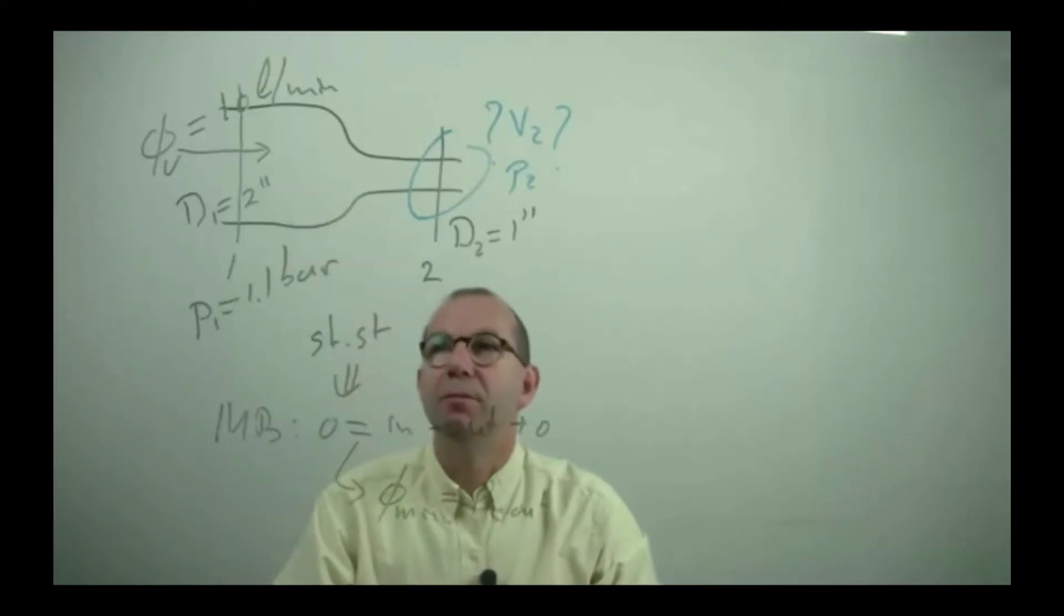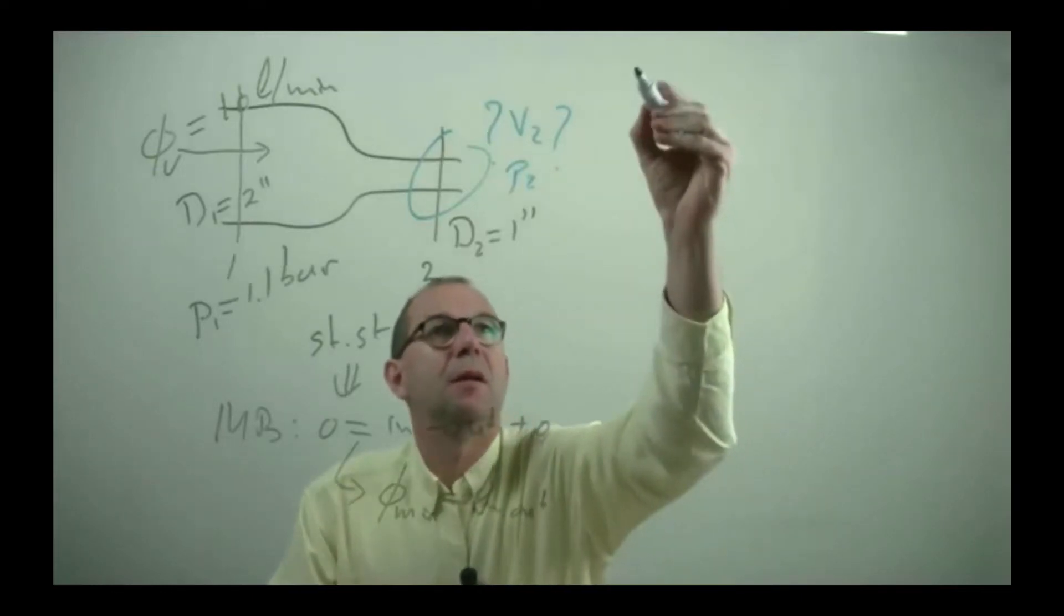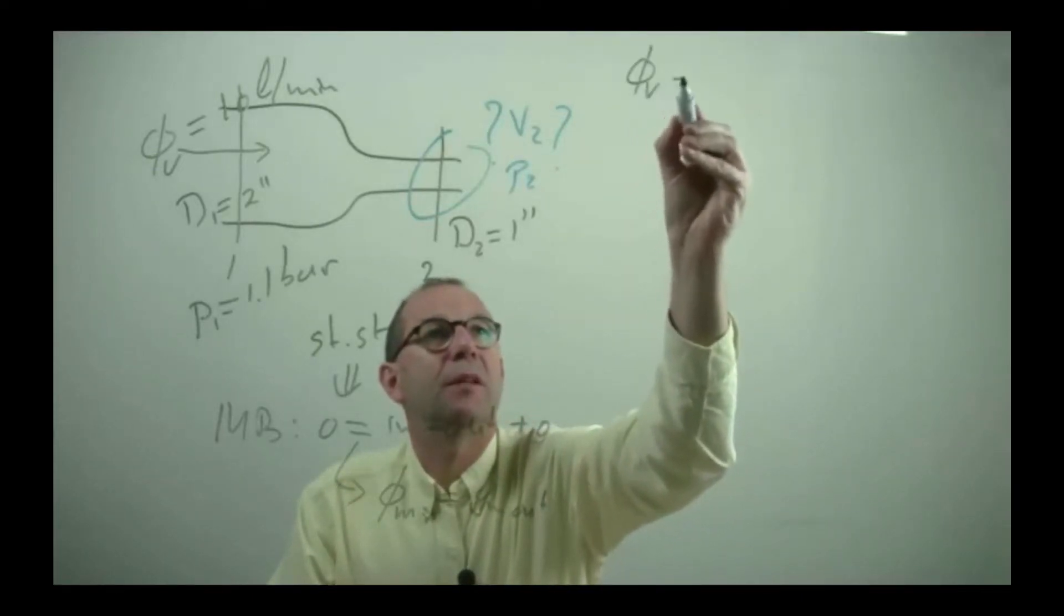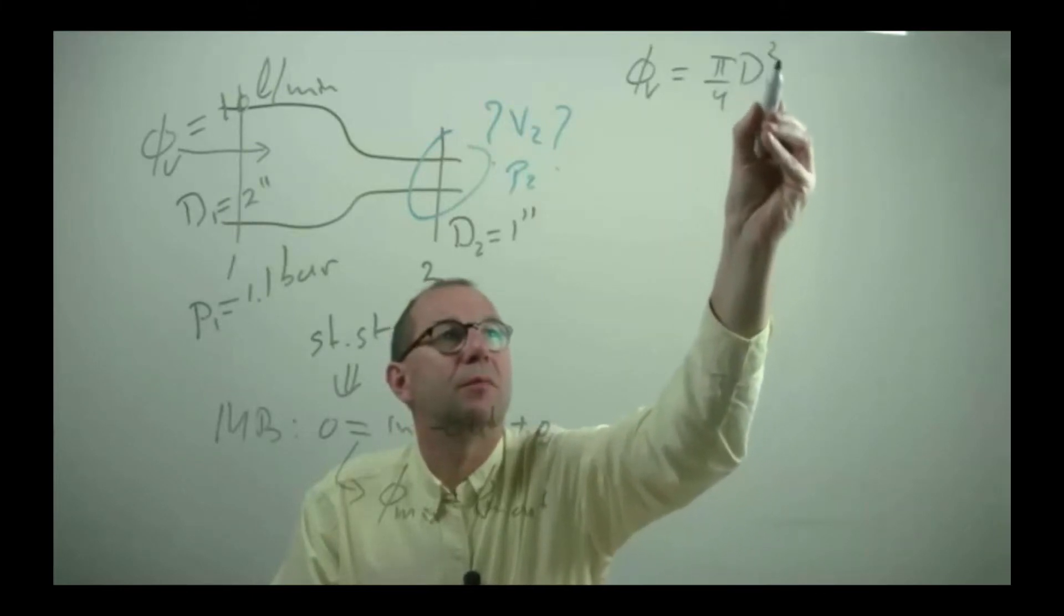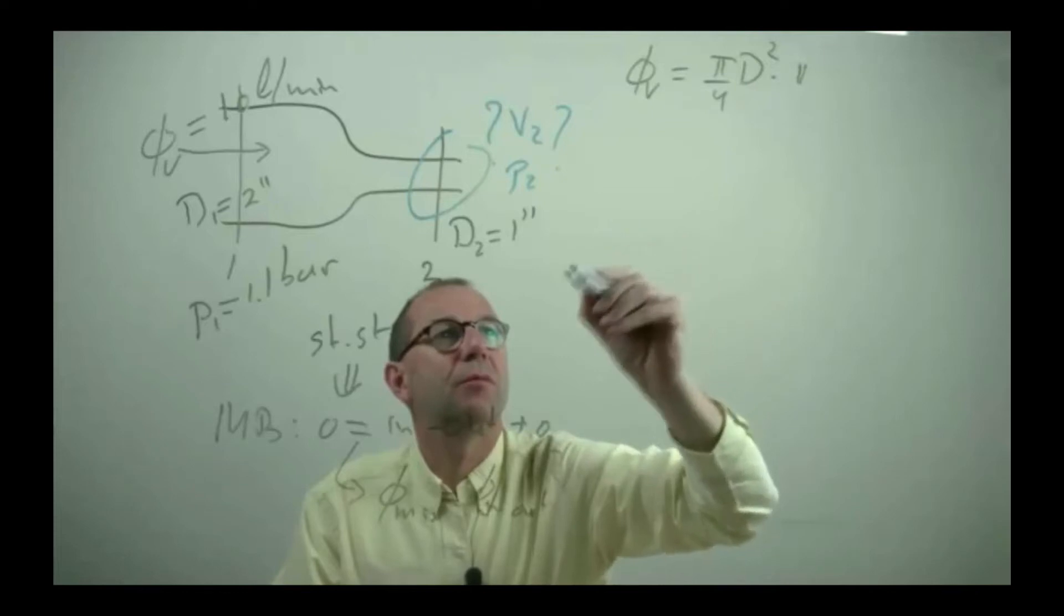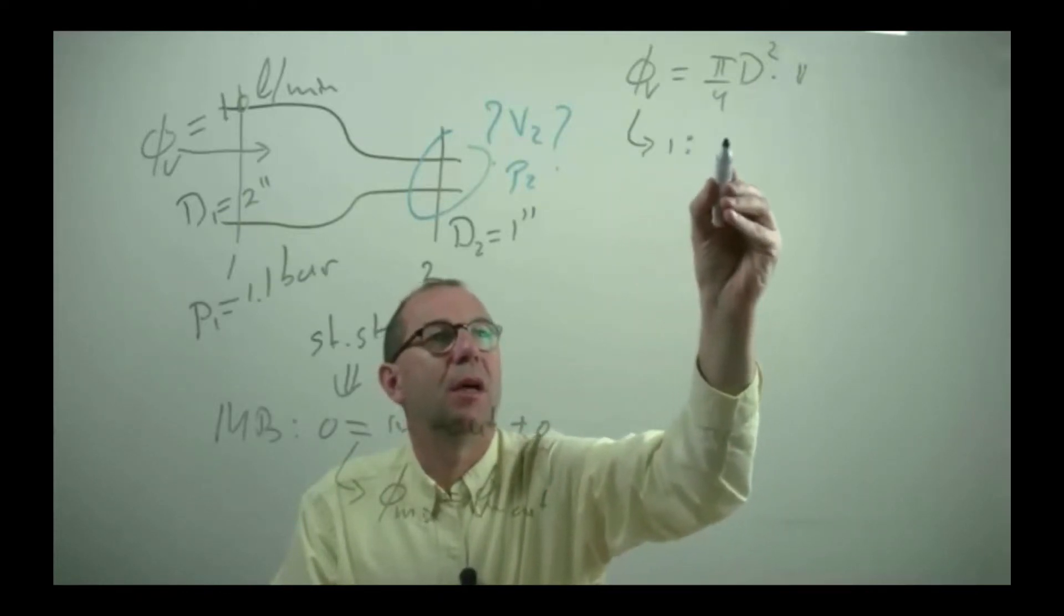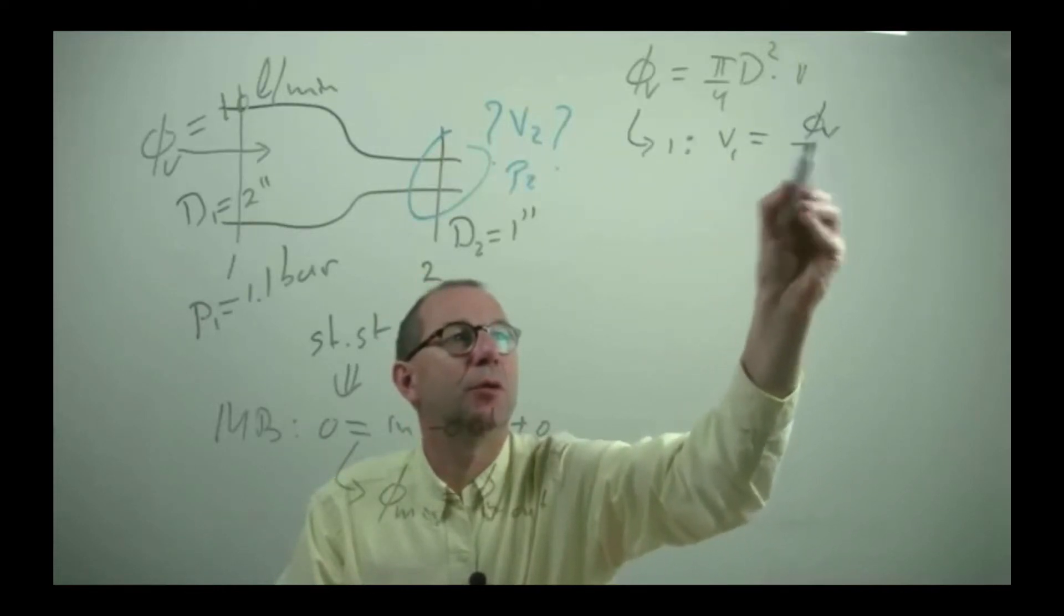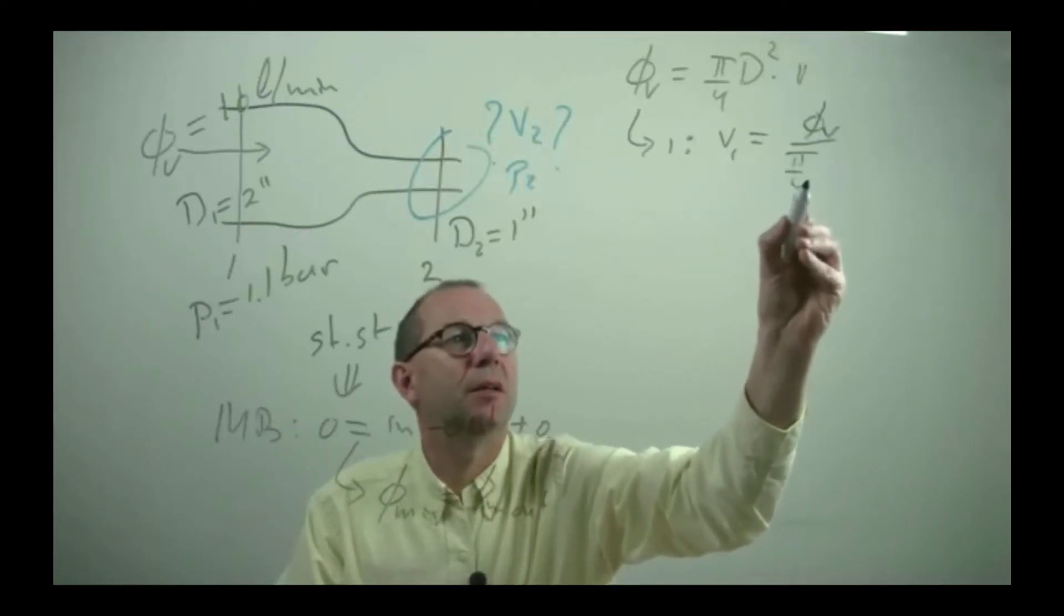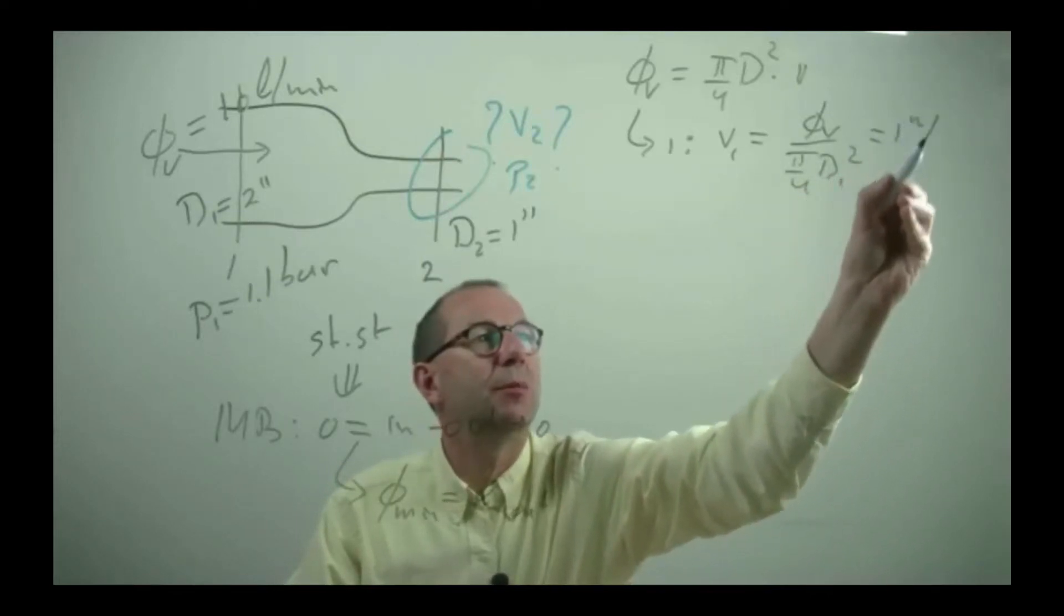From the inflow where I know the volume I can compute the inflowing velocity. The flow rate is the cross sectional area times the velocity. Thus at 1 I have V1 equals flow rate divided by the area of 1 giving me a velocity of a meter per second.